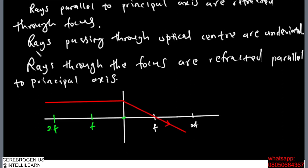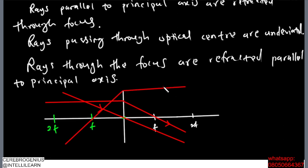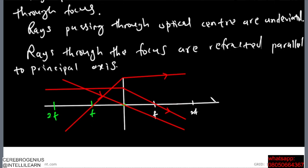The second rule: when rays pass through the optical center they are undeviated — a ray coming this way just continues going that way with no deviation. The third rule: rays that pass through the focus are refracted parallel to the principal axis, so by the time such a ray touches the lens it becomes parallel to the principal axis.